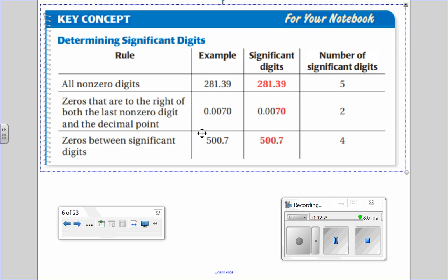And then finally, in 500.7, every digit counts because these two zeros are wedged between the five and seven. If you have somebody wedged between, you count them. So 1, 2, 3, 4, there's four significant digits.